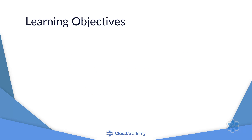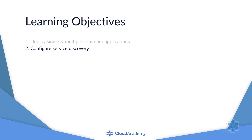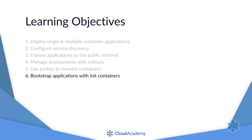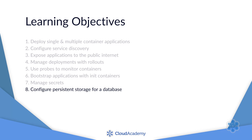Let's identify our concrete learning objectives: 1. Deploy single and multiple container Docker applications. 2. Configure service discovery. 3. Expose applications to the public internet. 4. Manage deployments with rollouts. 5. Use probes to monitor running containers. 6. Bootstrap applications with init containers. 7. Manage secrets. 8. Configure persistent storage for a database container. And finally, most importantly, 9. Prepare for Kubernetes in production.